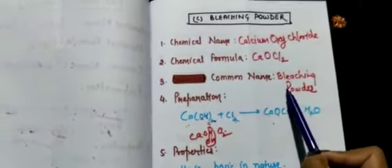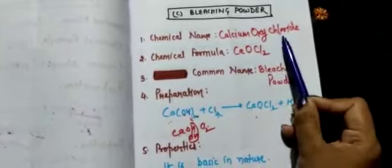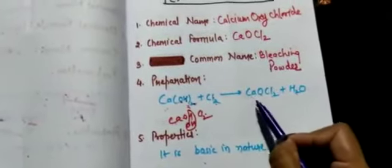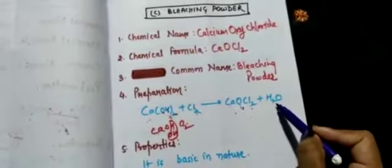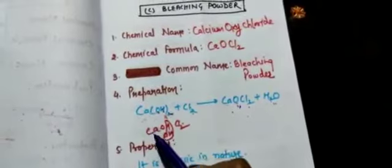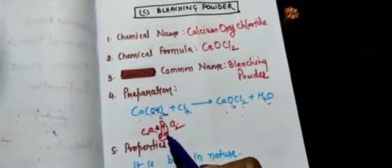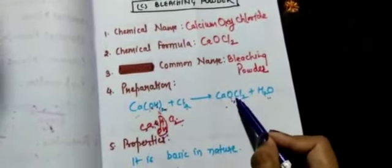The third type is bleaching powder. Its common name is bleaching powder and chemical formula is CaOCl2 (calcium oxychloride). For preparation, slaked lime — calcium hydroxide — combines with chlorine to form calcium oxychloride (bleaching powder) and water is released. The nature of bleaching powder is basic. It is used in textile industries for bleaching cotton and linen, and in laundry for bleaching washed clothes.